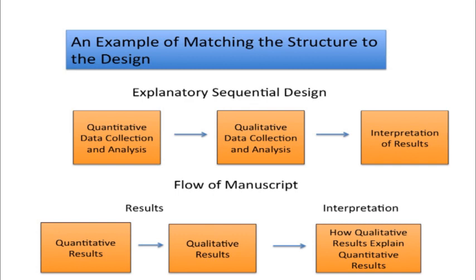In this visual, you can see an explanatory sequential design diagram where the researcher starts quantitatively — let's say they do a survey project — then they follow up qualitatively with interviews, and then draw some interpretation from how the qualitative interviews help to explain the quantitative results. A very typical explanatory sequential design. You would expect to see the flow of the results and interpretation section actually mirror this project process.